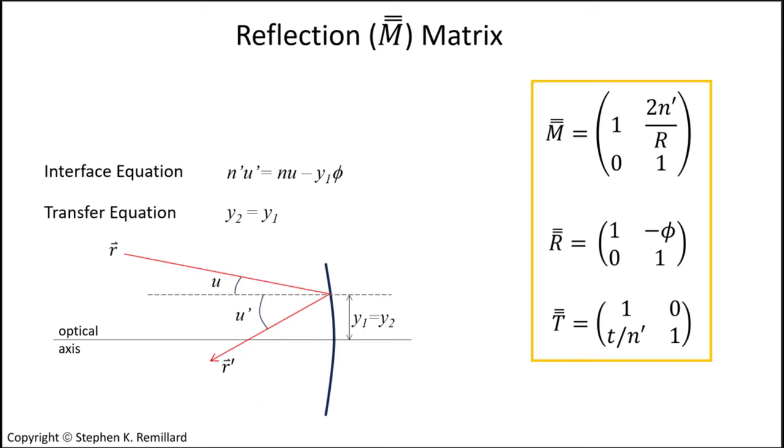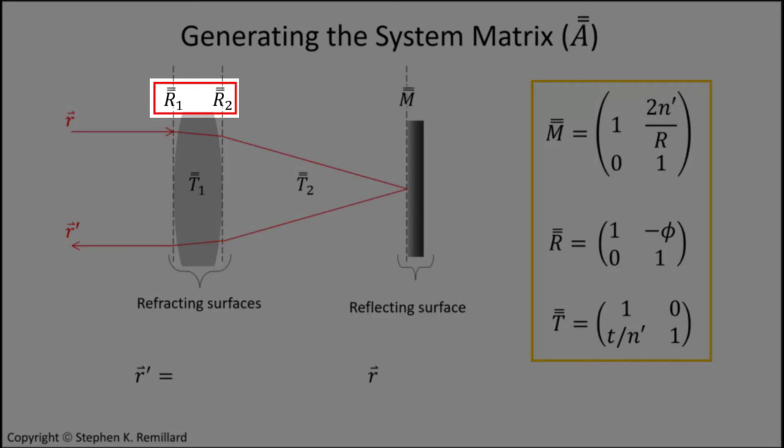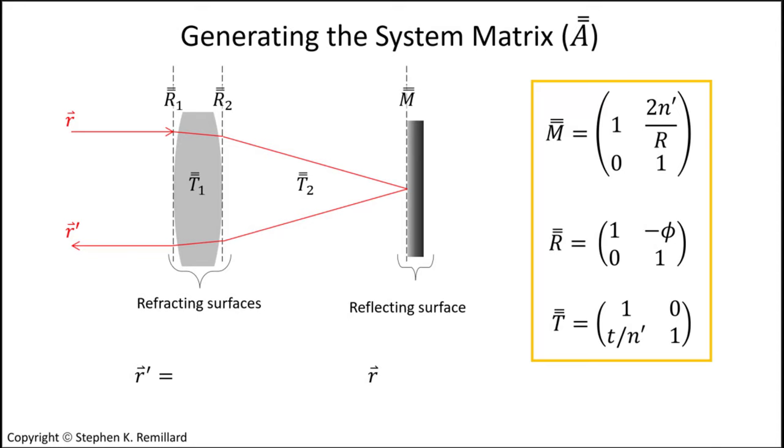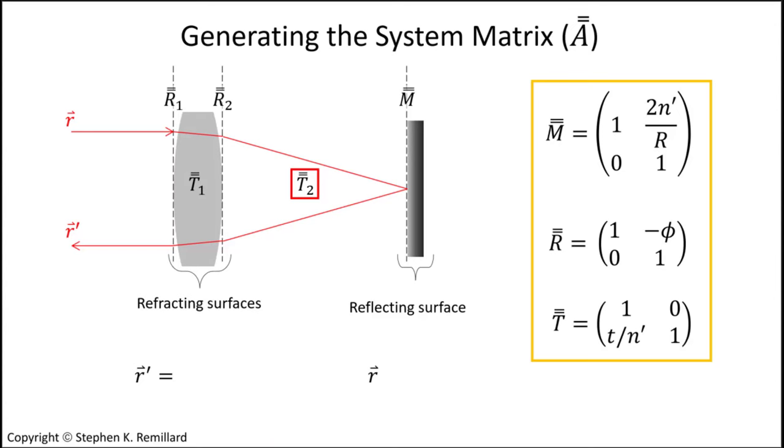Now the reflection matrix is known and is listed here along with the refraction and transfer matrices. I'll use a simple system with a lens and a mirror to demonstrate how these matrices are used as operators on a ray vector. I'll build out the equation down here at the bottom, where an incoming ray vector r is operated on by a combination of these matrices resulting in an outgoing ray r prime. The matrices r sub 1 and r sub 2 describe refraction at the front and back surfaces of the lens respectively, with the matrix t sub 1 describing the transfer of that ray through the lens and t sub 2 the transfer of the ray to the mirror, where the reflection is described by the matrix M.